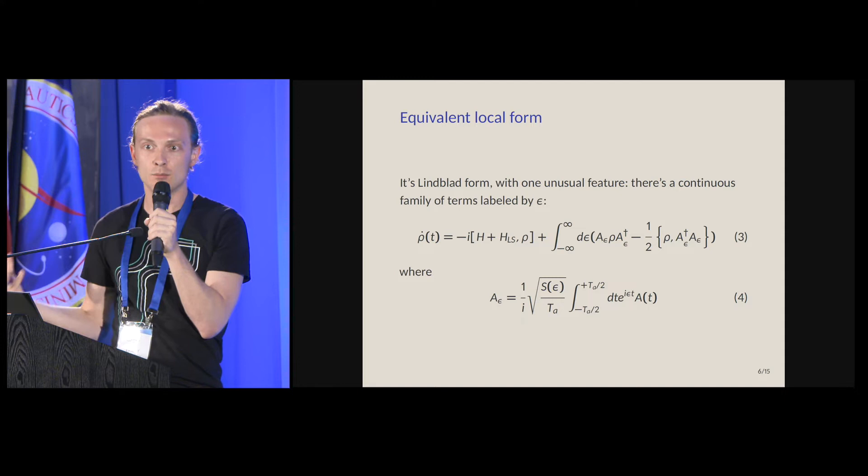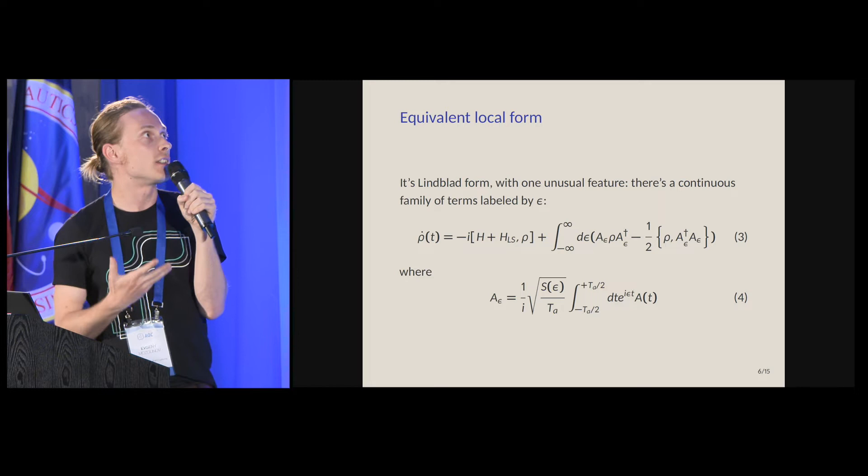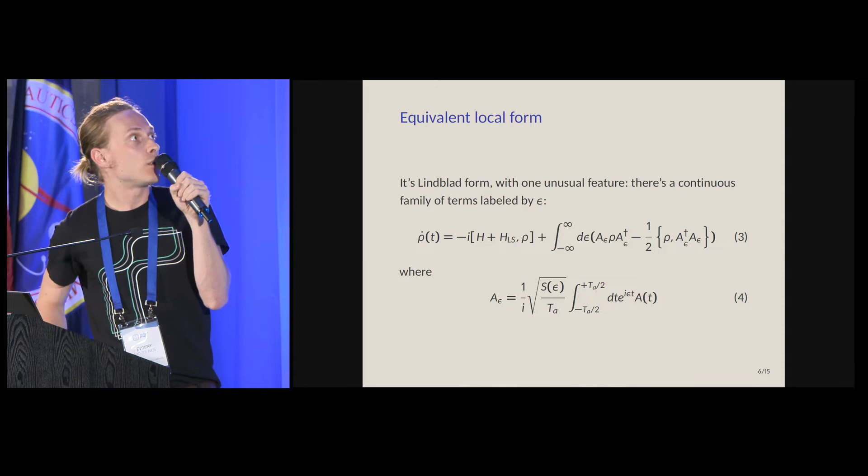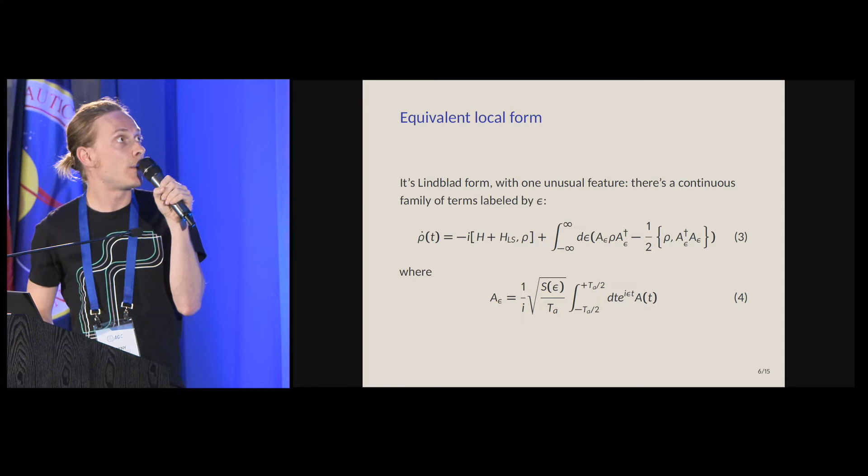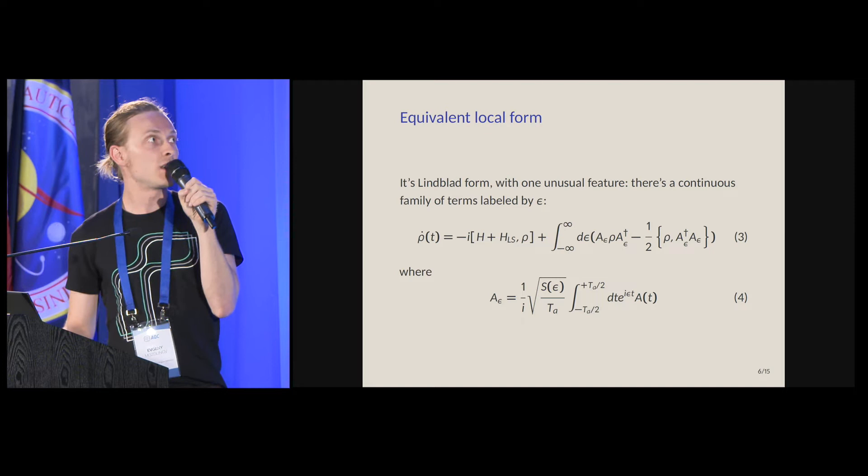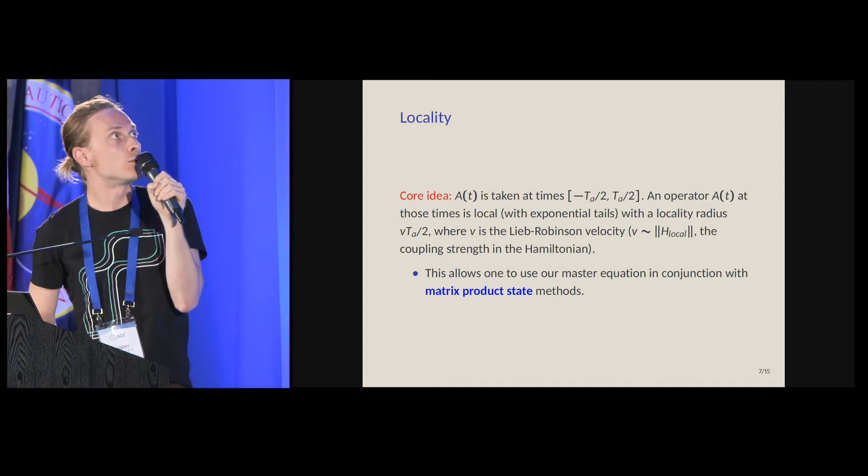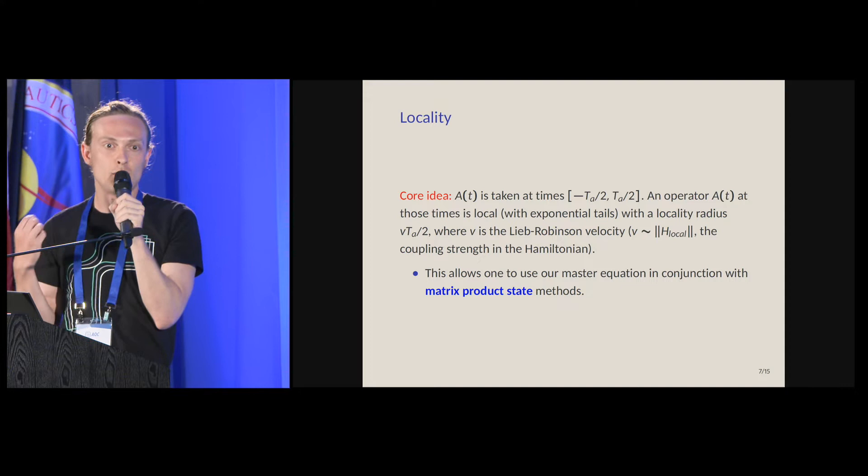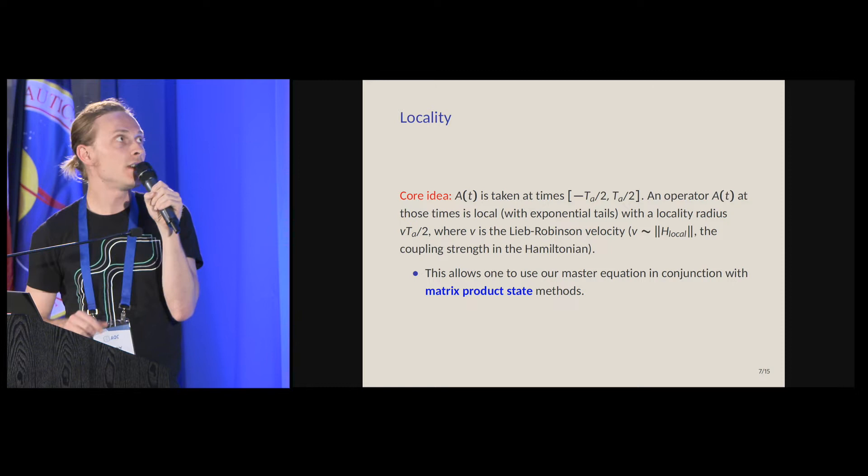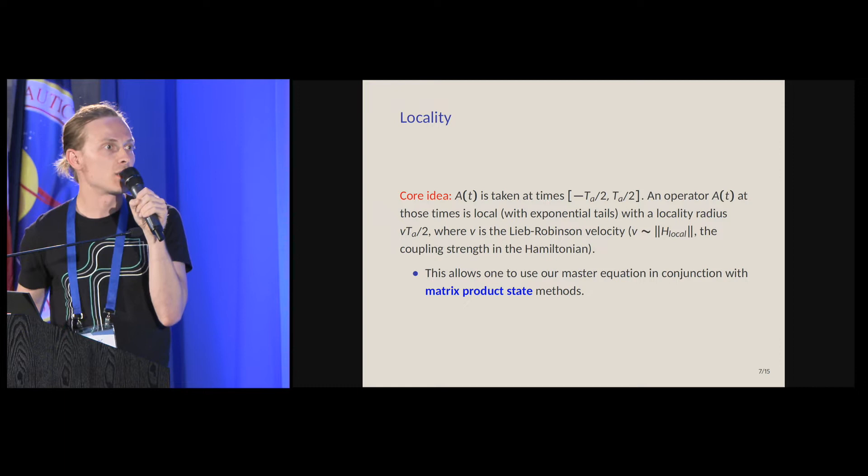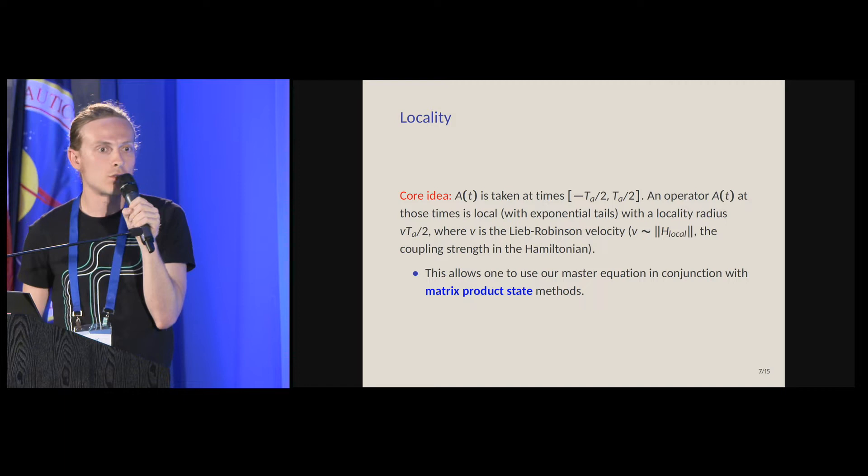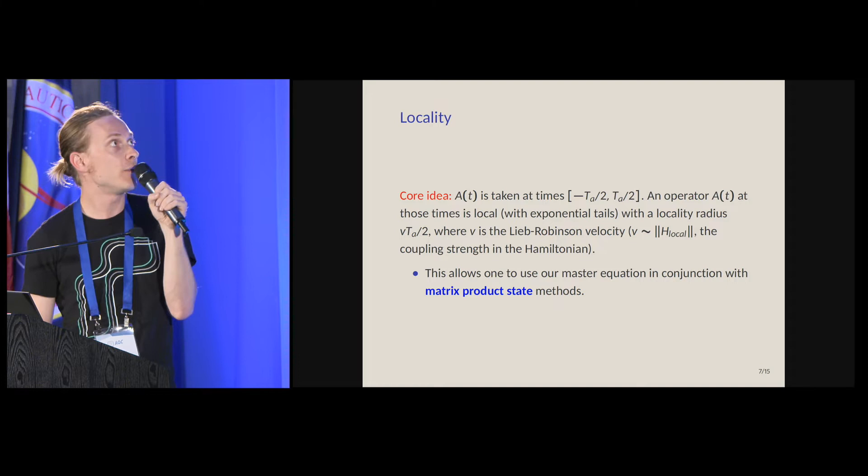I said it's completely positive. Every completely positive equation can be written in Lindblad form. This is the equivalent form of my equation that is Lindblad, and the generators now are given by time averaging of the time-dependent bath operators with some phase factor. The interesting thing is that this time-dependent bath operator is only taken at times in this interval, minus tau_a over 2 to tau_a over 2. If we start with a local bath operator, then over this time it only will spread to a finite radius by the dynamics of the system. This radius will be tau_a over 2 times the Lieb-Robinson velocity, which is actually just the norm of the local terms in the system Hamiltonian.